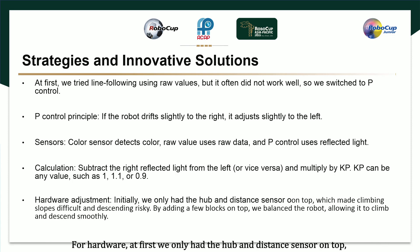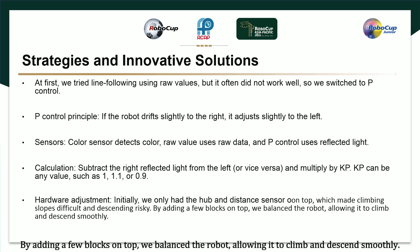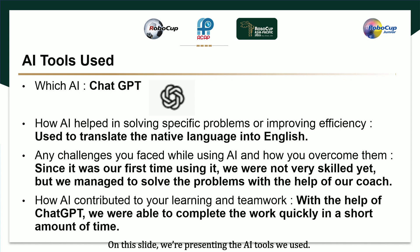For hardware, at first we only had the hub and the distance sensor on top, which made climbing blocks difficult and descending risky. By adding a few blocks on top, we balanced the robot, allowing it to climb and descend smoothly.